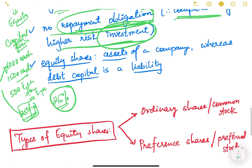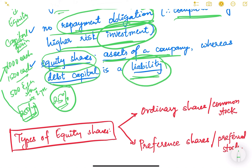One more important difference: equity share capital is an asset of the company, whereas debt capital is a liability. Debt capital has to be returned to the people, so it is a liability. Equity share capital is the owner's money, so it is considered the company's own asset — this is an important distinction to keep in mind.